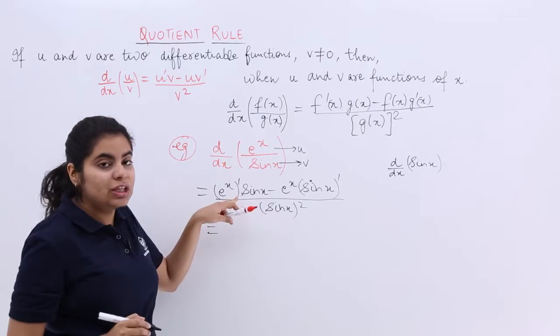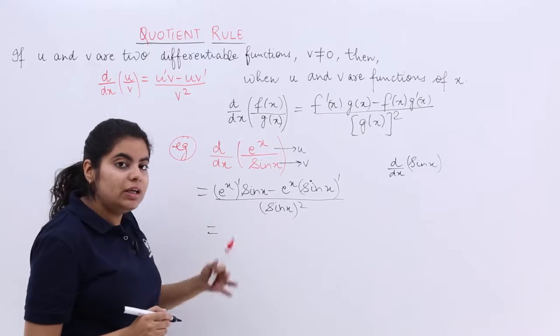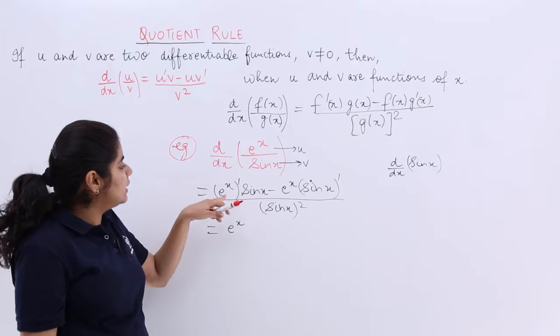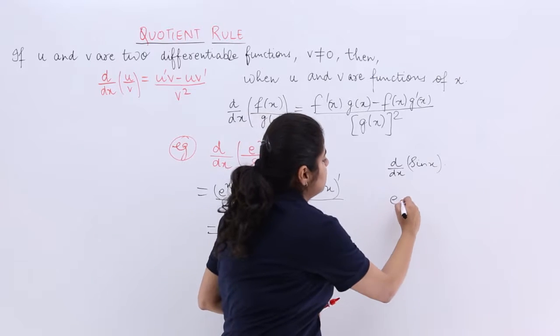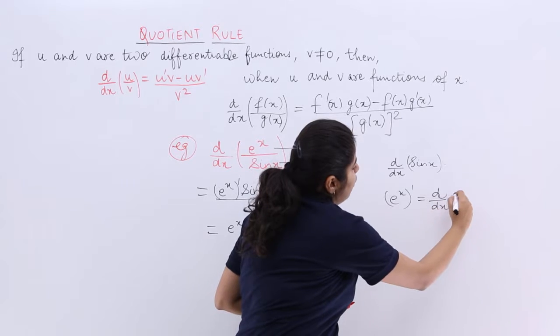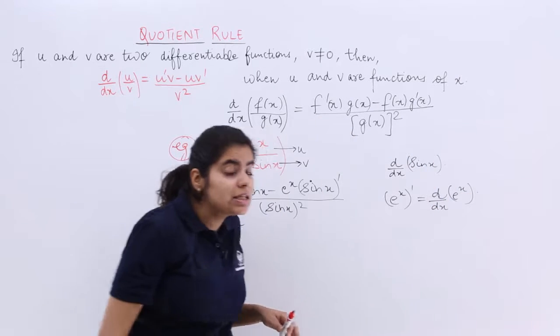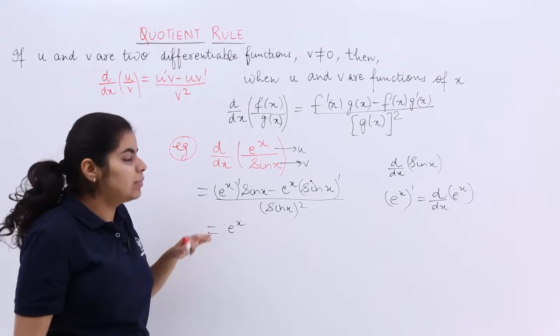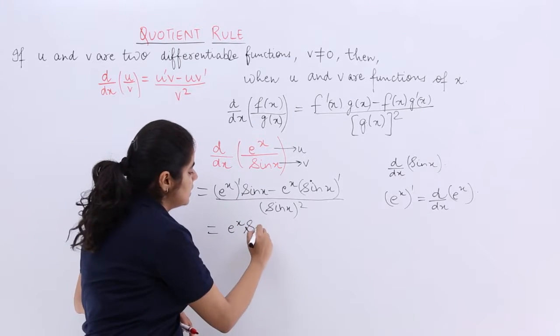Now, e raised to the power x - what is the derivative of e raised to the power x with respect to x? It is e raised to the power x only. You see that e raised to the power x dash means what? It means d by dx of e raised to the power x. And what is the differentiation of e raised to the power x with respect to x? It is nothing but e raised to the power x.